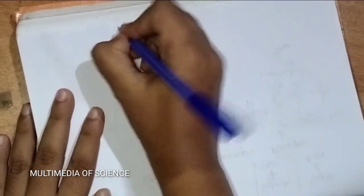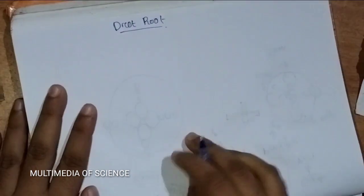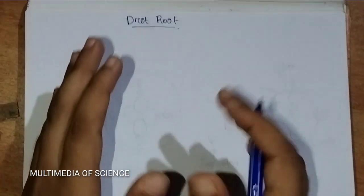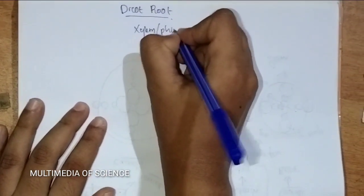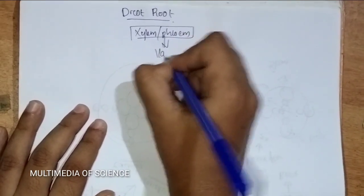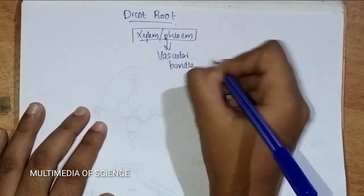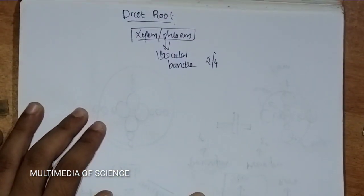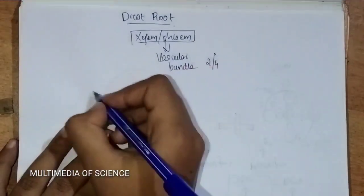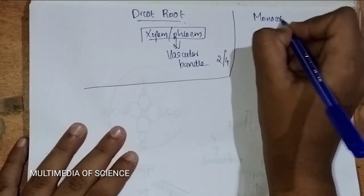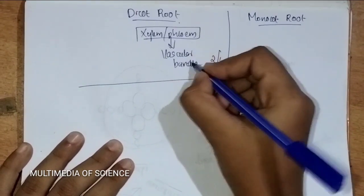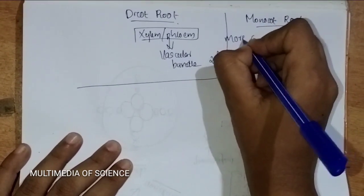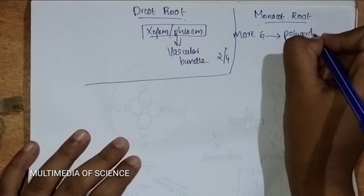Next we are dealing with the characteristics of Dicot root. The vascular bundle includes xylem and phloem. These vascular bundles — two to four — are present in Dicot root. Then about Monocot root: the difference from Dicot root is that the vascular bundle number is six or more than six, which means a polyarch condition.